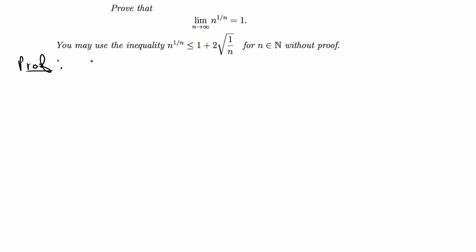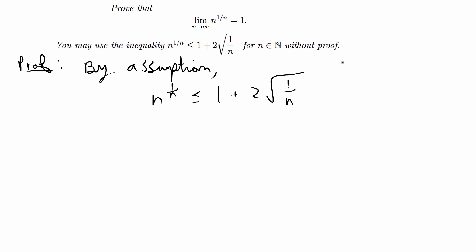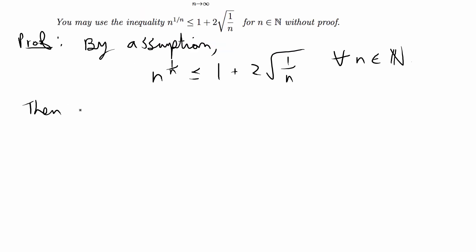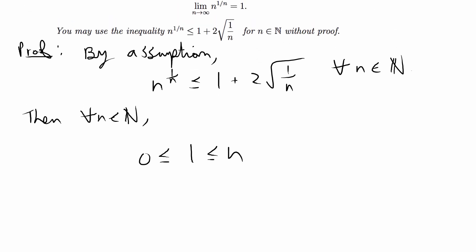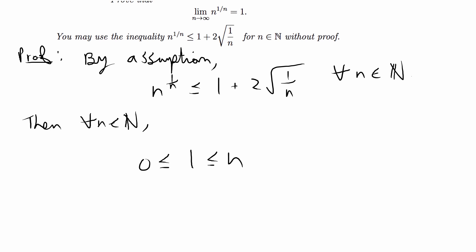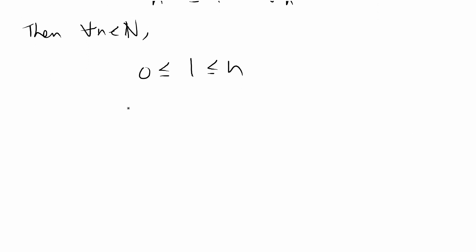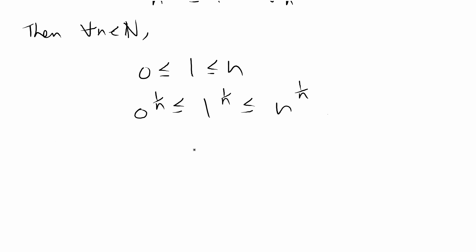So what I did was this. By assumption, I rewrite what we are given: n to the 1 over n is less than or equal to 1 plus 2 times the square root of 1 over n, for any n in the naturals. Then I noted that for any n in the naturals, 0 is less than or equal to 1 which is less than or equal to n. We want to manipulate this to get something less than or equal to n to the 1 over n, so we take each base to the power of 1 over n: 0 to the 1 over n, less than or equal to 1 to the 1 over n, less than or equal to n to the 1 over n.